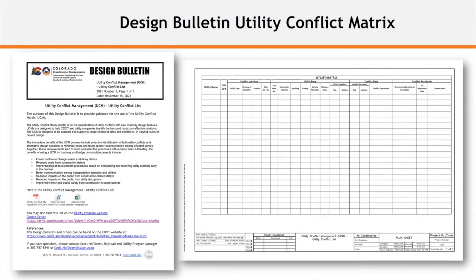The purpose of this design bulletin is to provide guidance for the use of the Utility Conflict Matrix, or UCM. The UCM is for the identification of utility conflicts with new roadway design features. UCMs are designed to help CDOT and utility companies identify the best and most cost-effective solutions.